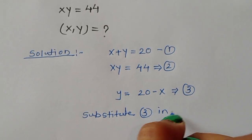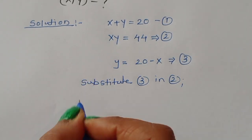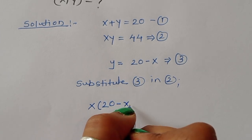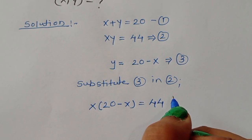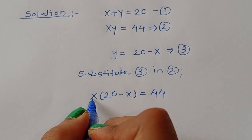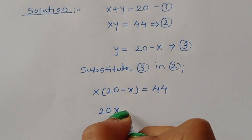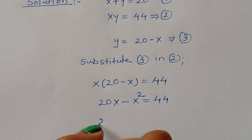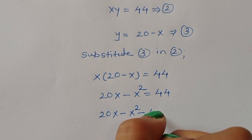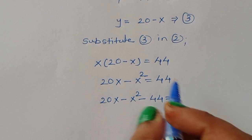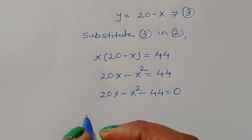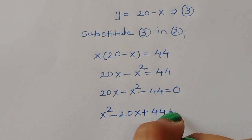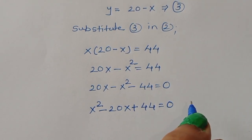Substituting equation 3 into equation 2, we get x times y, where y is 20 minus x, so x times (20 minus x) equals 44. Multiplying out: 20x minus x squared equals 44, giving us 20x minus x squared minus 44 equals 0. Multiplying through by minus 1, we get x squared minus 20x plus 44 equals 0.